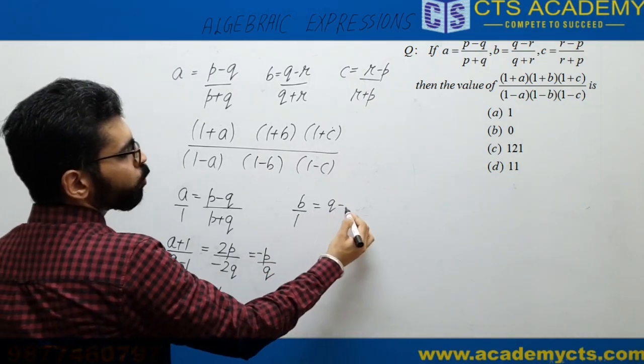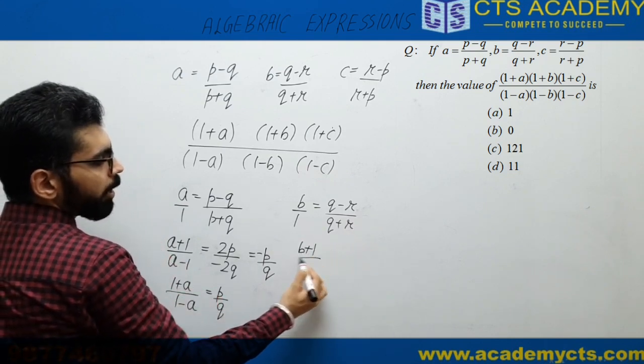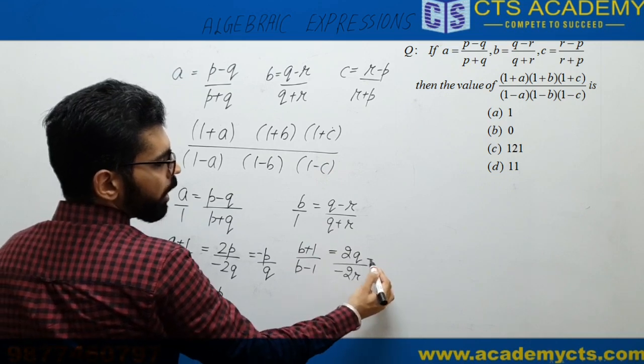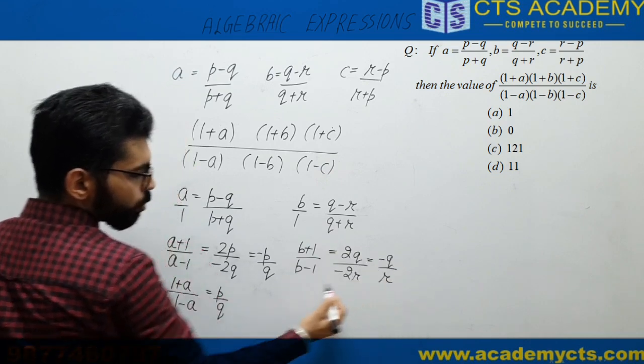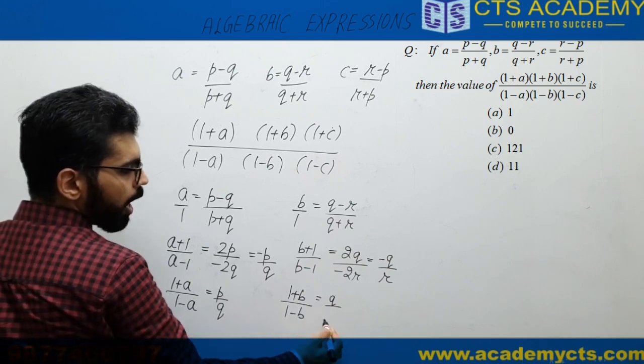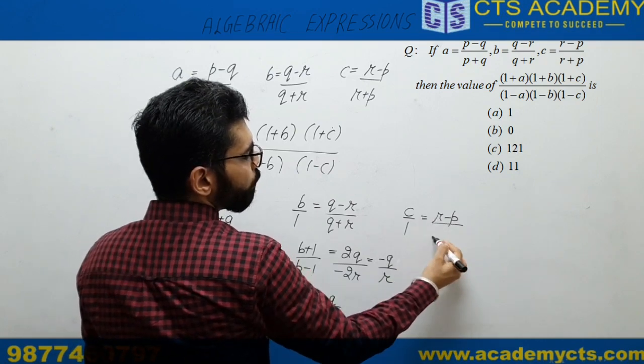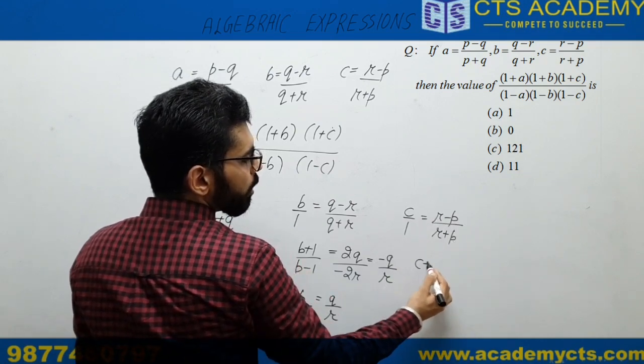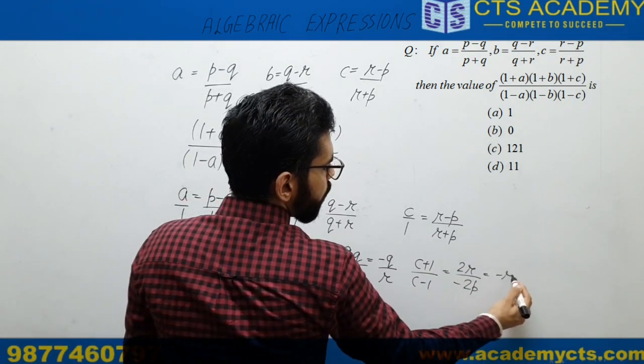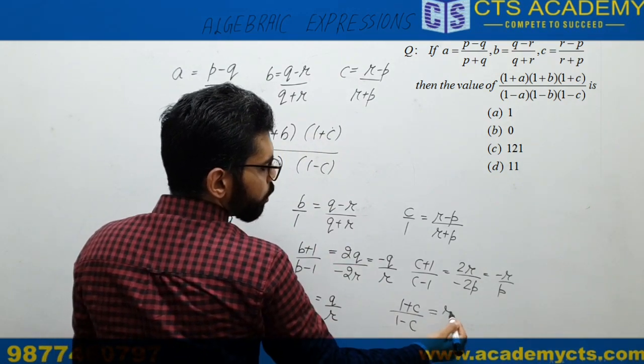In a similar manner, if we write B/1 = (Q - R)/(Q + R) and use componendo and dividendo, we get 2Q/(-2R), which means -Q/R. So (1 + B)/(1 - B) = -Q/R. Similarly, C/1 = (R - P)/(R + P). Using componendo and dividendo, we get 2R/(-2P). From here, (1 + C)/(1 - C) = -R/P.